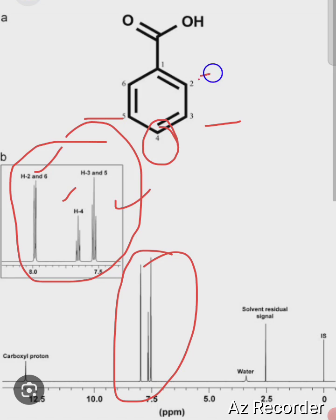This pattern is meta, then para, then ortho. The integration corresponding to these peaks is 2, 1, 2. This pattern is particularly for monosubstituted benzene rings.